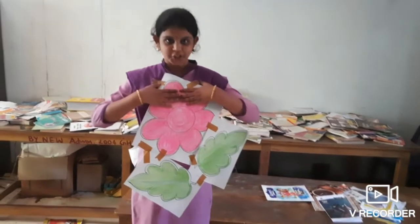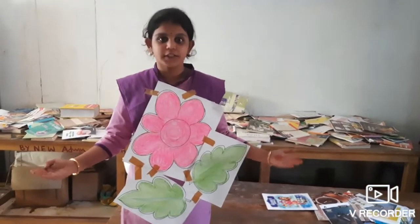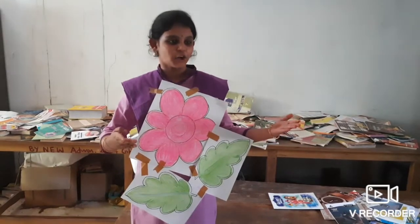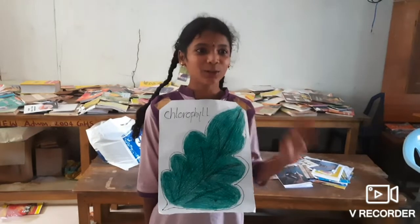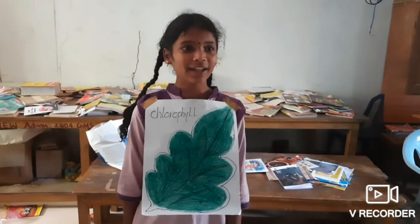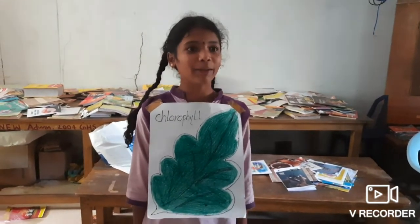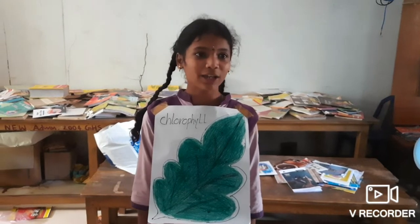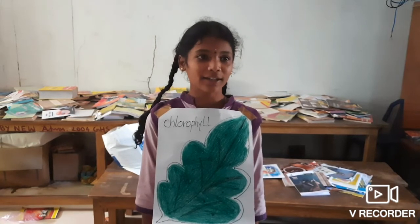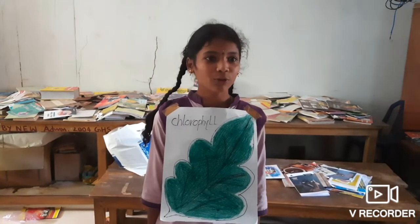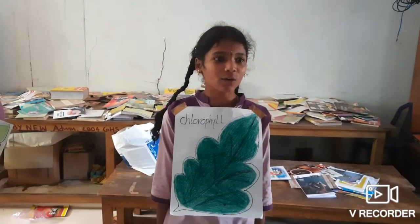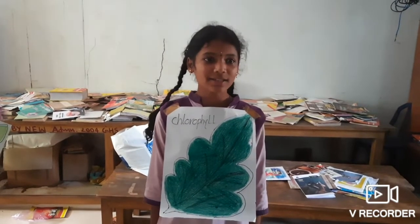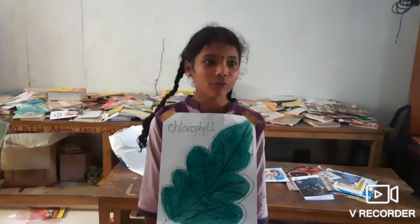Now I am introducing the main part of the leaves — Chlorophyll. Hi, I am Chlorophyll. The green parts of leaves contain a coloring pigment called chlorophyll. I work in the food factory of plants. Chlorophyll captures the energy of sunlight, and this energy is used to prepare carbohydrates.